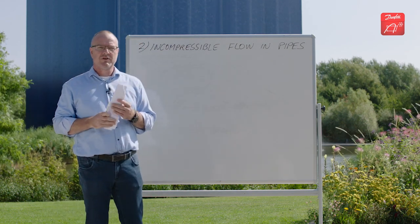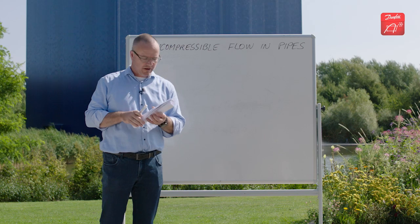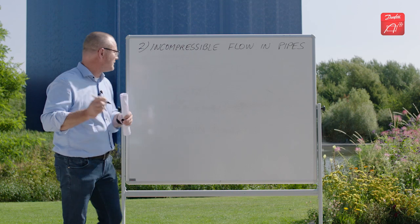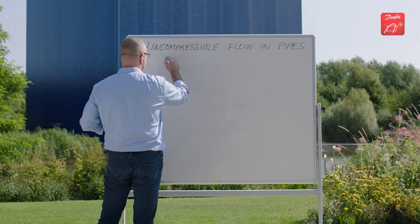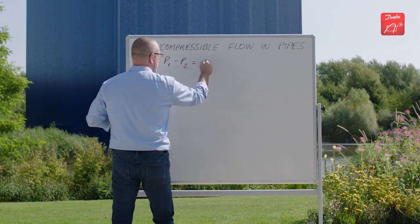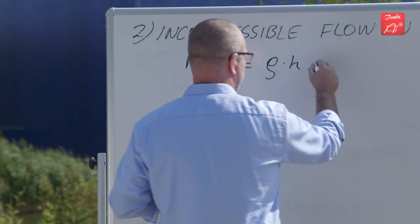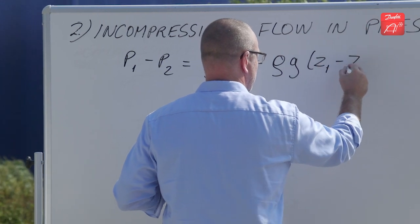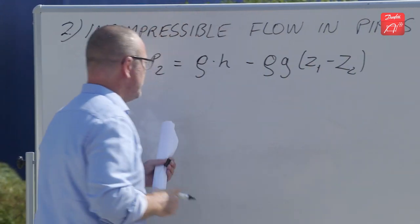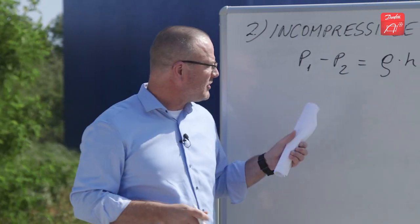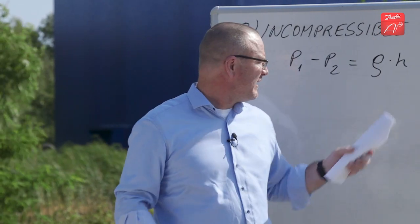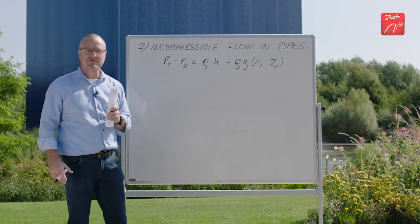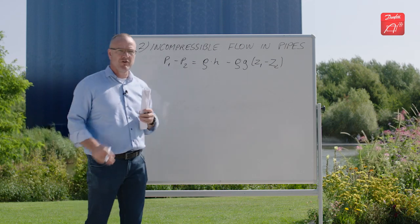Last time we talked about the basic energy equation and we developed it in a form that was usable for finding the pressure drop. Let's just write it again. And we also concluded that the thing we really need here is to find an expression for the head loss. And today we will try to find an equation for the head loss for incompressible flow in pipes.